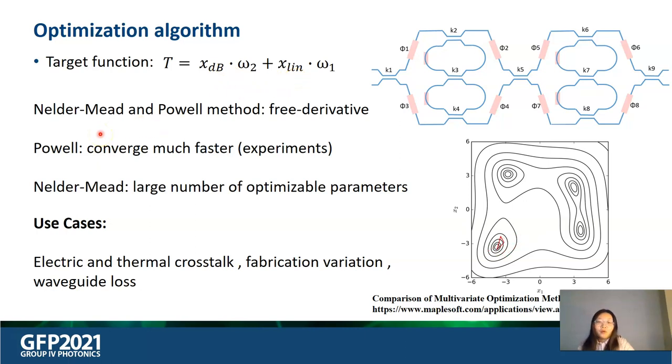Nelder-Mead and Powell are two free derivative optimization algorithms. It has been tested that the Powell method converges much faster than Nelder-Mead in real experiments. As I have shown before, the optimization algorithm could be used to try to compensate the influence from electrical and thermal crosstalk, and also could be used to improve the extinction ratio affected by waveguide loss and fabrication variation.